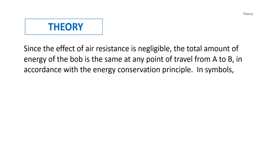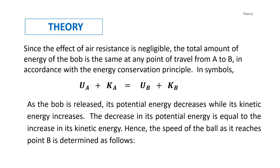Since the effect of resistance is negligible, the total energy of the bob is the same at any point of travel from A to B, in accordance with the energy conservation principle. In symbols: potential energy plus kinetic energy at point A equals kinetic energy plus potential energy at point B. As the bob is released, its potential energy decreases while its kinetic energy increases. The decrease in potential energy equals the increase in kinetic energy, and the speed of the ball as it reaches point B is determined from this relationship.